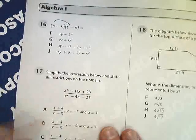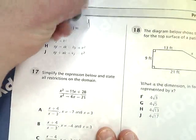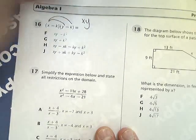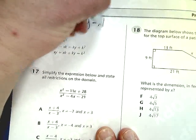So x times y, so I get xy, shockingly. And then x times negative k gives you negative xk.